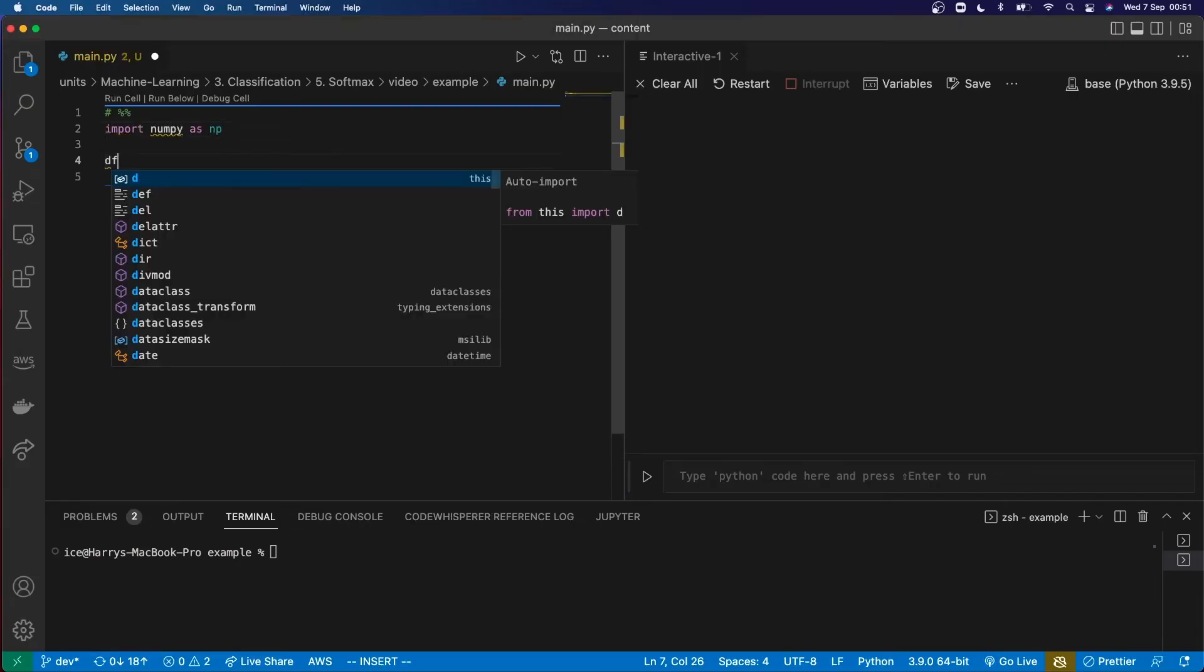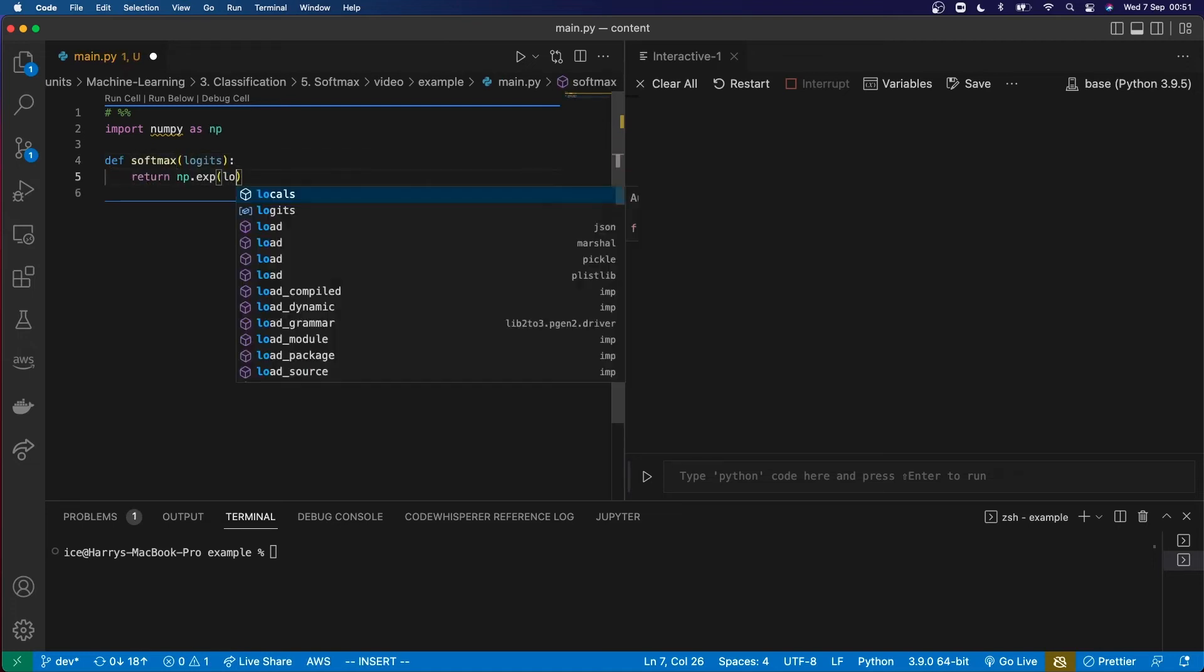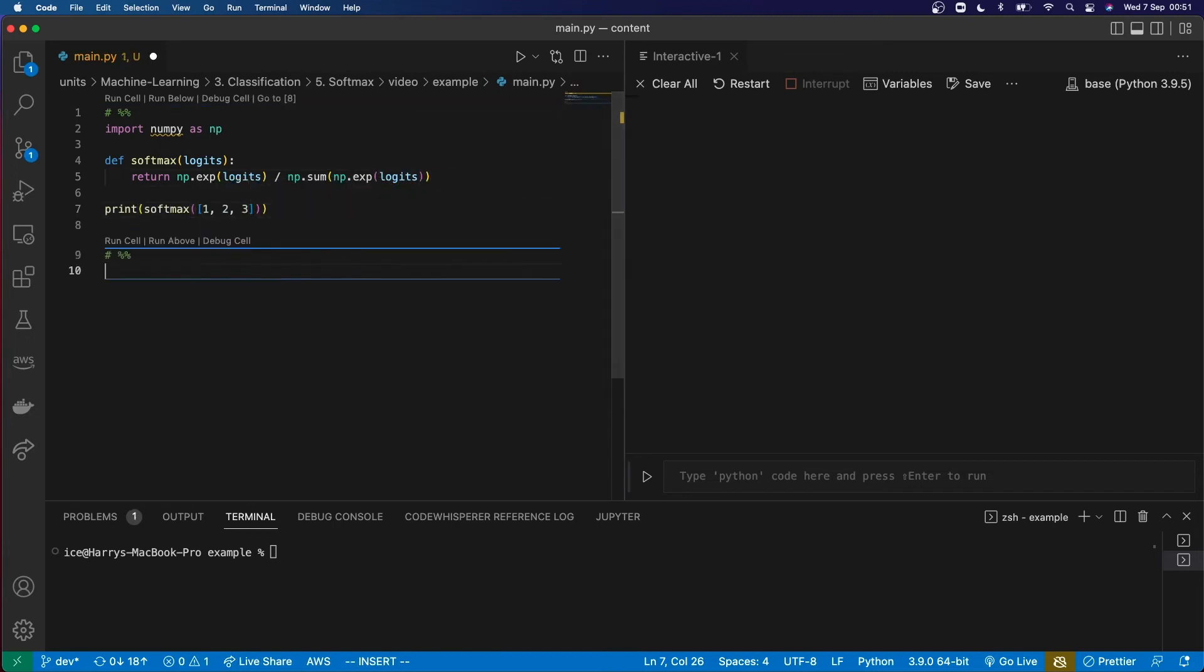If I wanted to implement a softmax function from scratch in Python, it would look something like this.